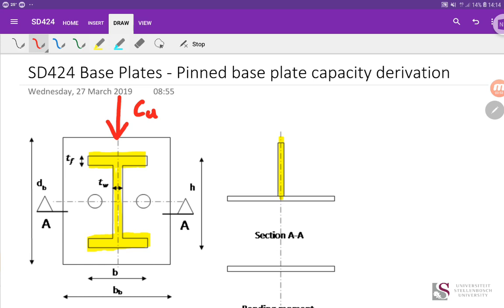Now over the years with testing and research a simplified method has been developed for calculating capacity. Basically what we do is we assume the load spreads out a uniform distance from the column on all sides. So what I'm drawing now is a frame all the way around the column which spreads out what we call a distance C away from the column. And so this hatched area is a distance C.